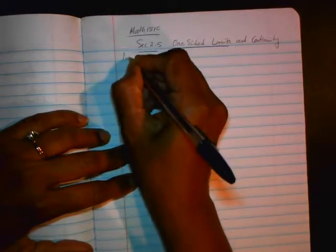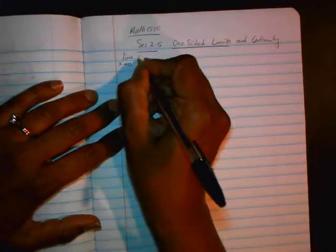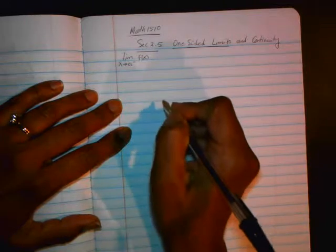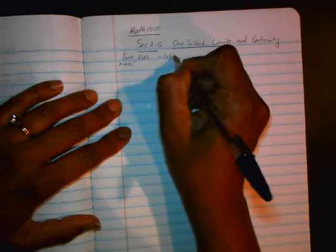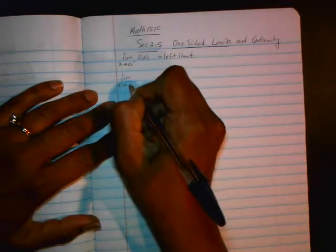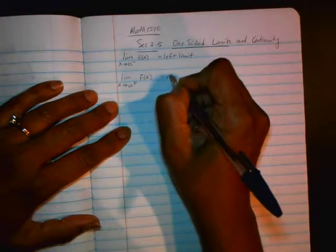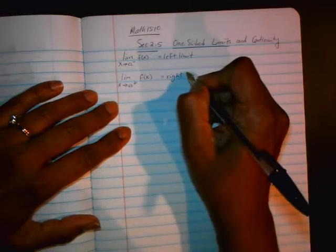The limit as x goes to a from the left is denoted with a tiny little minus sign. This is called a left limit. And when you approach a from the right hand side, you put a tiny little plus sign and that's your right limit, the right hand limit.